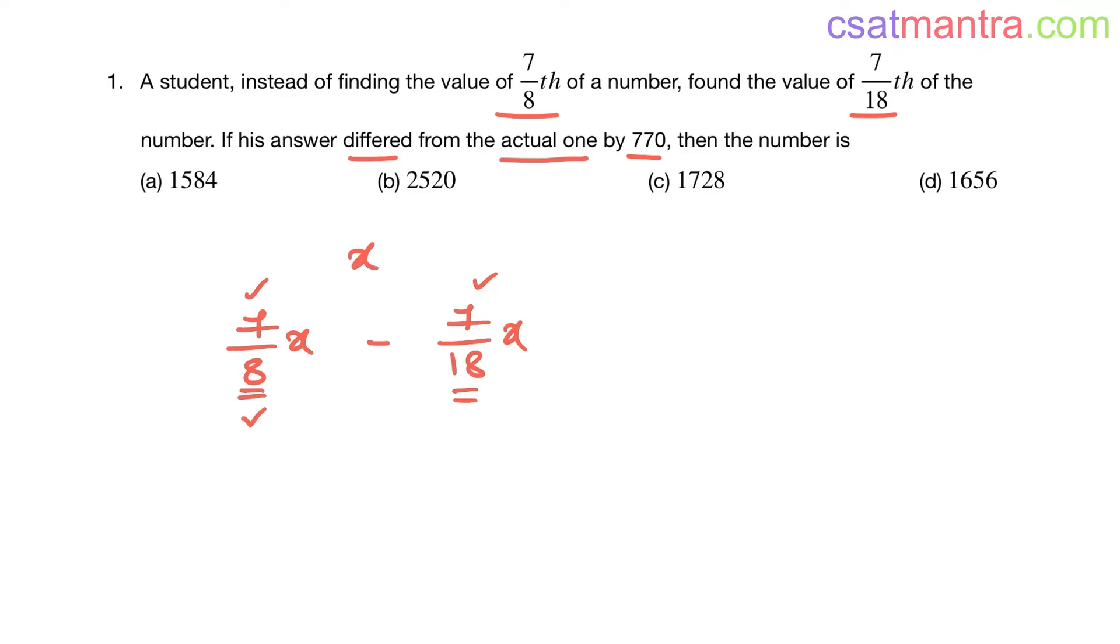So the difference is 770, my friends. So I am taking 7x common: one by eight minus one by eighteen. This is equal to 770.